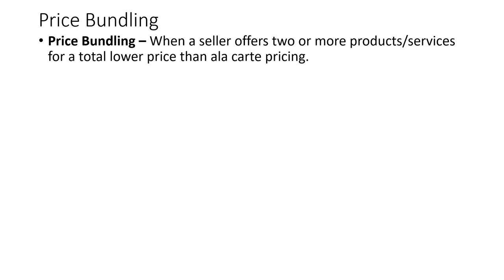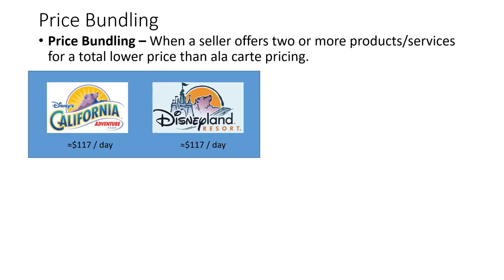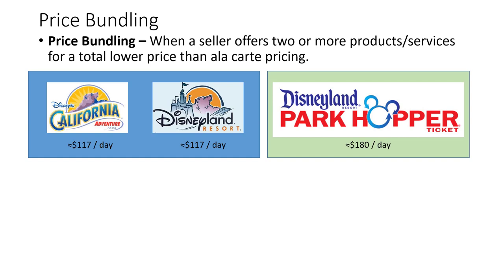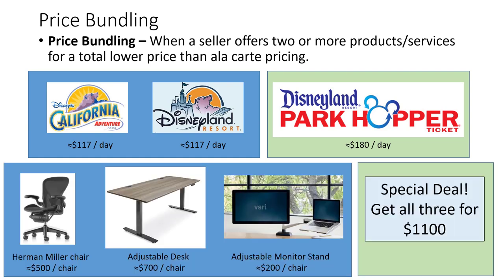It's so pervasive you may not even realize it has its own term. Consider these typical day pass prices for Disney's two Disneyland resort areas — each one will typically cost about $117 a day. Alternatively, you could buy the single day park hopper ticket where the purchaser can bounce back and forth between the two parks at their own whim, and that ticket costs $180 per day. This is an example of price bundling. Another example: a small business sells a Herman Miller chair for $500, an adjustable desk for $700, and an adjustable monitor stand for $200. If there's a special deal where you could buy all three for $1,100, that is a price bundle.